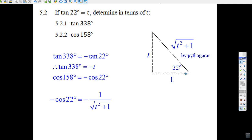Well, now we know the hypotenuse. We know the adjacent side is 1. So negative the cosine of 22 degrees must be the negative of the adjacent 1 over the hypotenuse of root t squared plus 1.